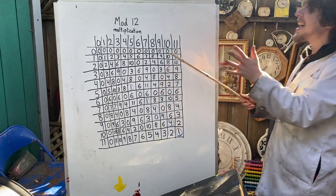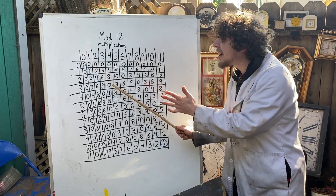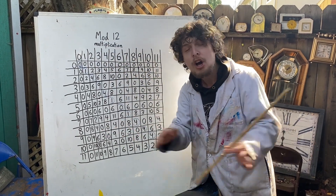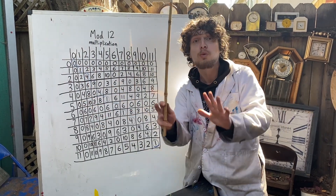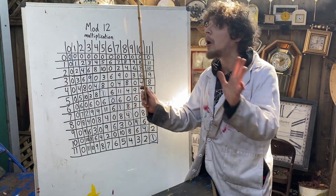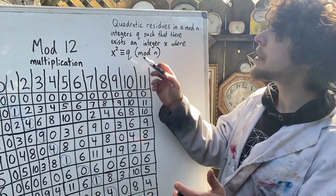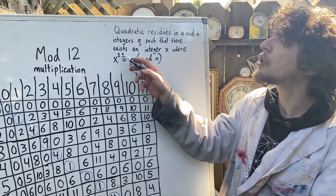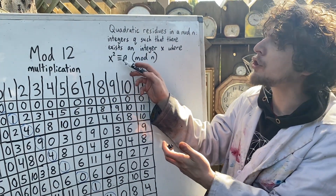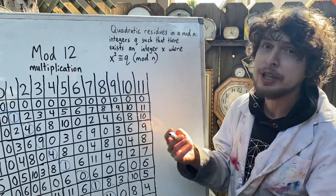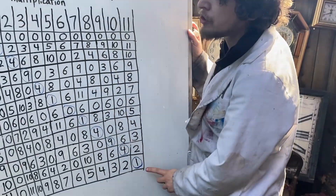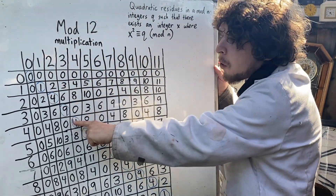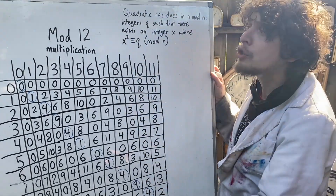Numbers like this that lie on the diagonal of modular tables and are the only numbers you can hit when you square something in that mod are so important that they have the name quadratic residues of that mod, and they come up all over number theory. More technically speaking, a number q is a quadratic residue of a mod n if there's some integer x such that x squared is congruent to q in that mod. As these diagonals of this chart are the only possible results when we square one of these numbers, 0, 1, 4, and 9 are the quadratic residues in mod 12.